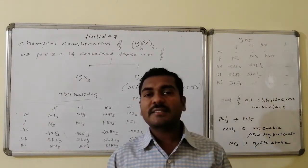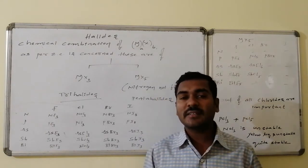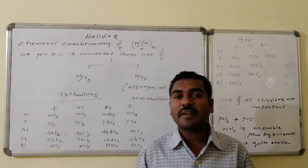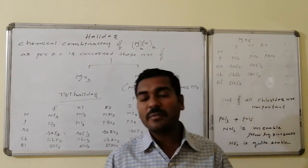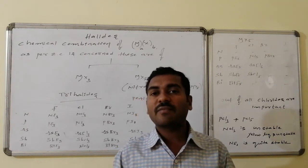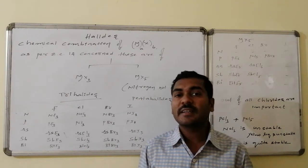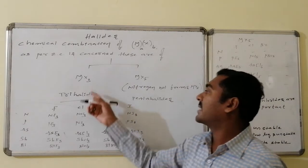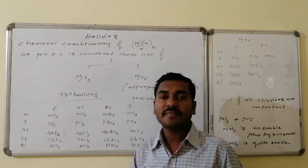In the plus 3 oxidation state, as halogen is a monovalent atom not having the ability to form any kind of pi bonds, it can form 3 sigma bonds. That is, MX3 type of compounds can be possible, and these are said to be trihalides.